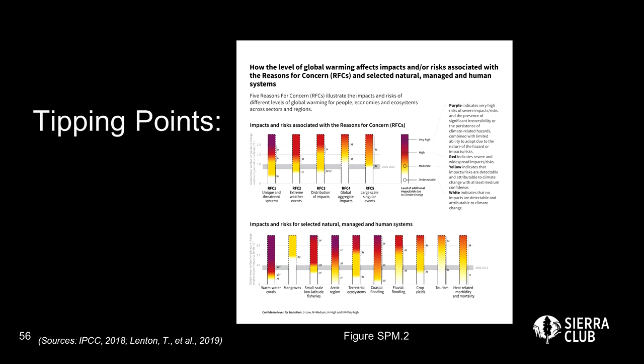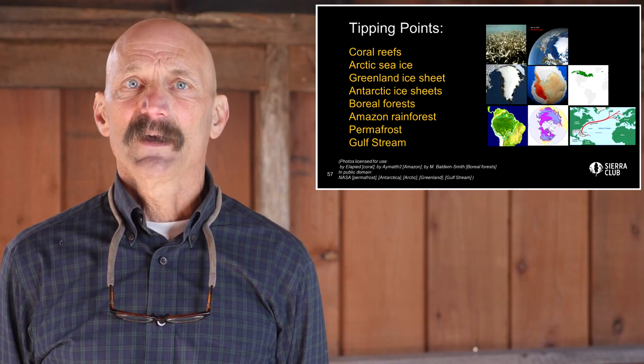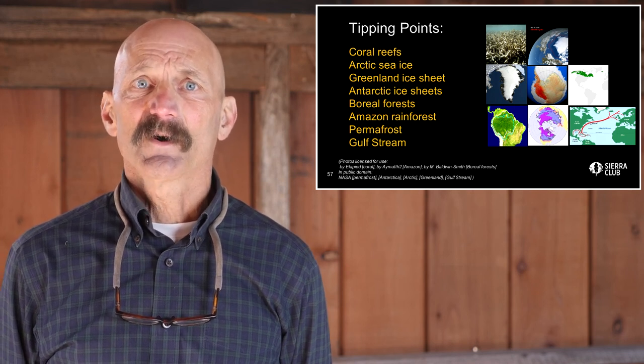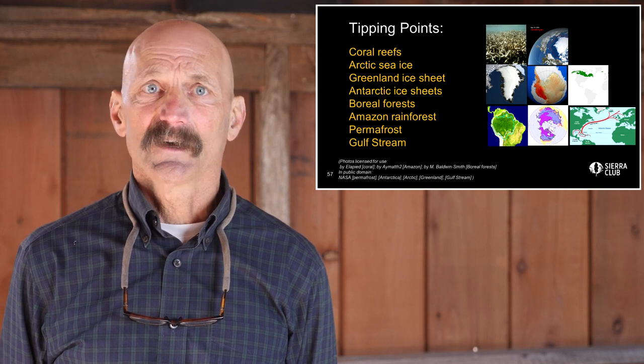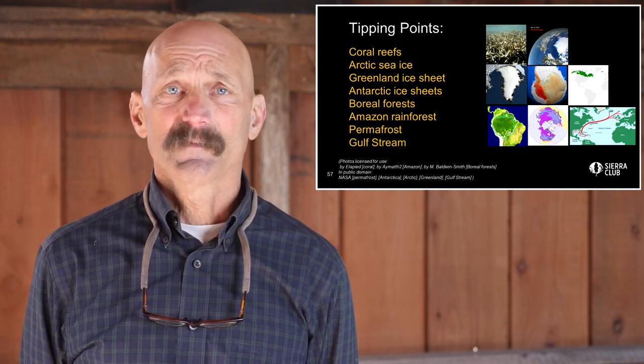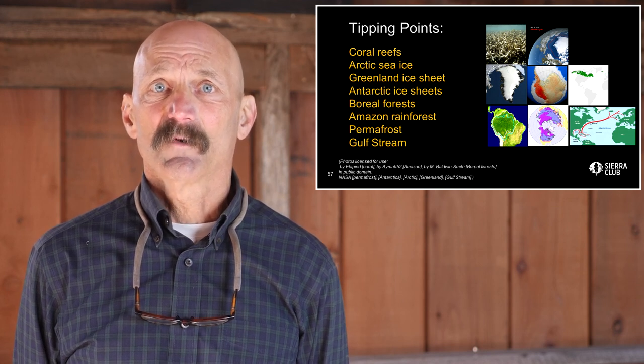The IPCC's 2018 special report on global warming of 1.5 degrees focuses on several high-risk areas, each indicated by a vertical bar. Colors from yellow to orange to red indicate increasing impacts and risks that vary with temperature. The thin gray horizontal band shows where we were from 2006 until 2015 — we are now above that band. We are venturing through a minefield of climate tipping points. Parts of our Earth at significant risk include coral reefs, Arctic, Greenland, and Antarctic ice sheets, boreal forests, the Amazon rainforest, permafrost, and the Gulf Stream or Atlantic circulation.